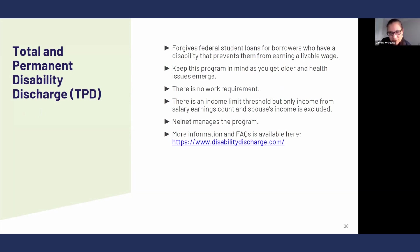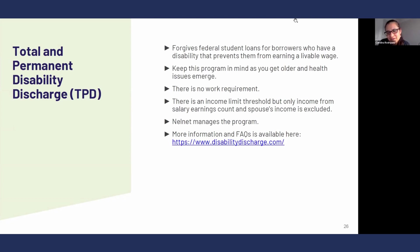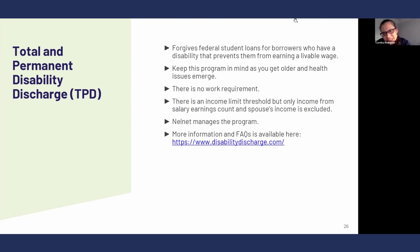No matter how often we explain the IDR Account Adjustment and how much we try to simplify it, it's never going to be a completely simple concept. Just know that if you've got loans with different repayment histories, you have the ability to combine them together before the end of the year and you would receive the longest repayment history applied to your entire consolidated balance, moving you closer to forgiveness. There are also some caveats and issues you have to be aware of when you do that, so reach out for help if you need help consolidating or figuring that out.